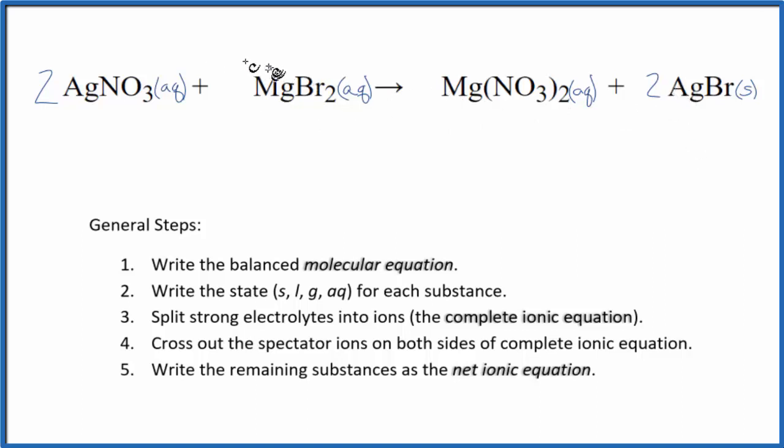So silver bromide is going to be a solid. In fact, it'll be a precipitate. We have these two compounds reacting and this is going to form as a solid. It's going to fall to the bottom of the test tube.